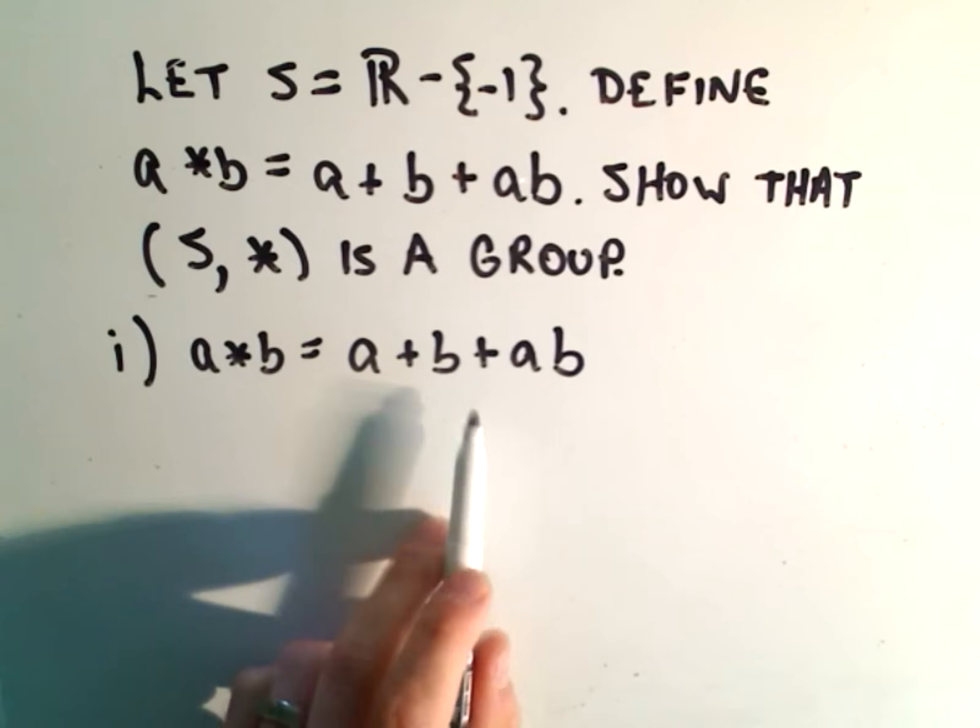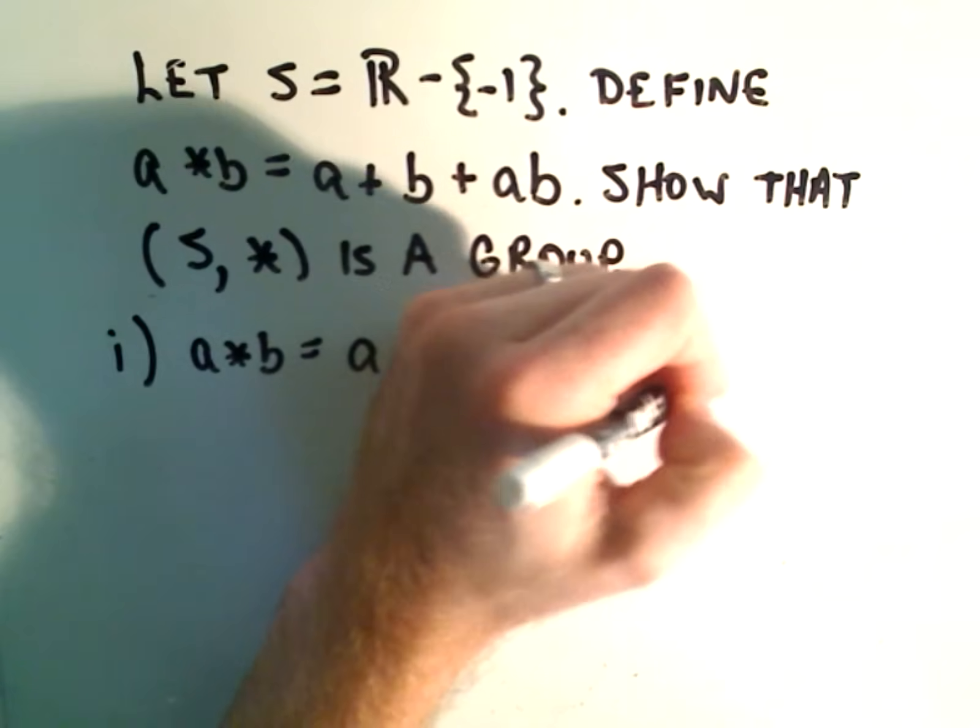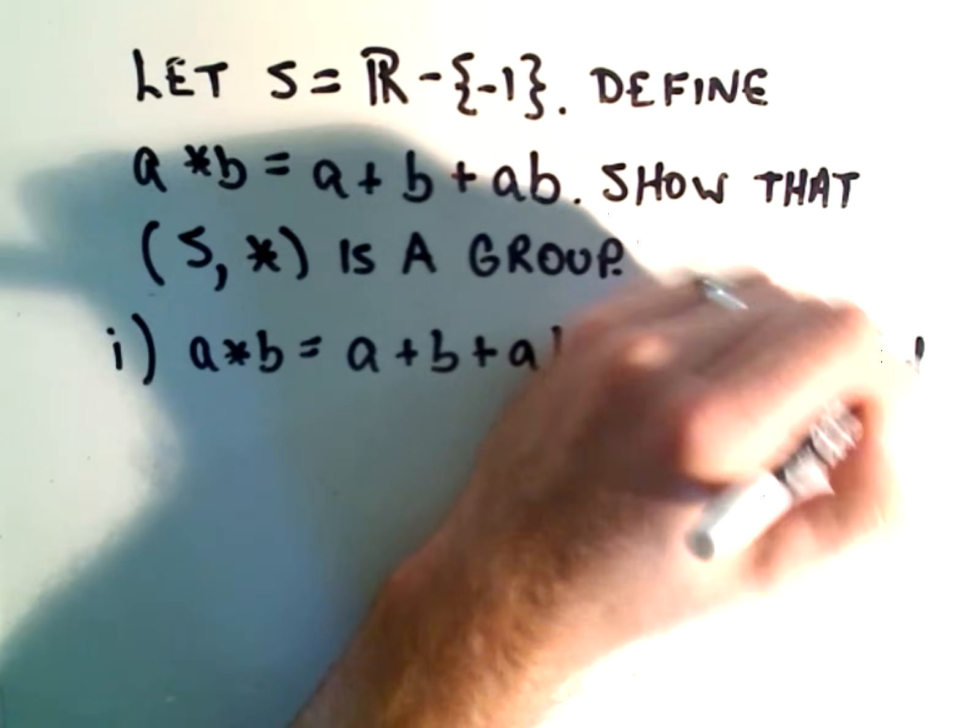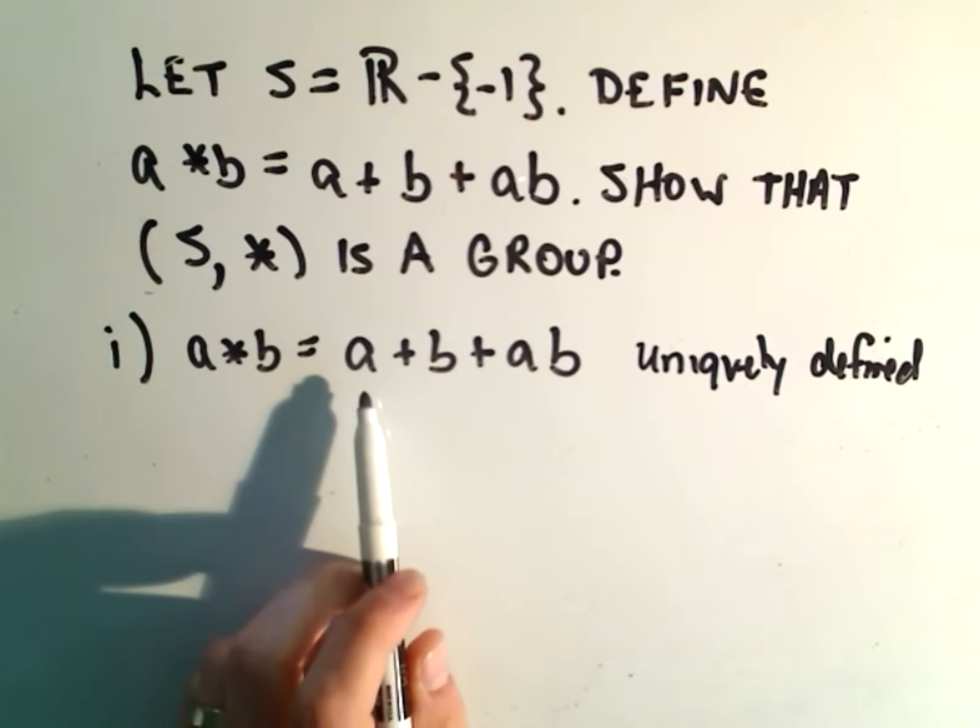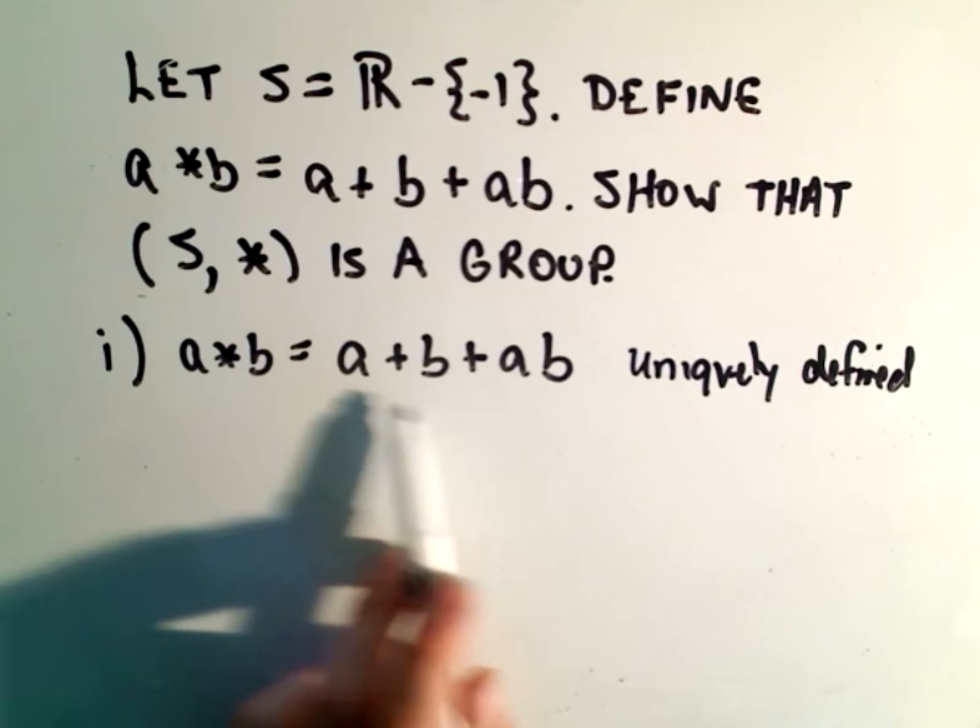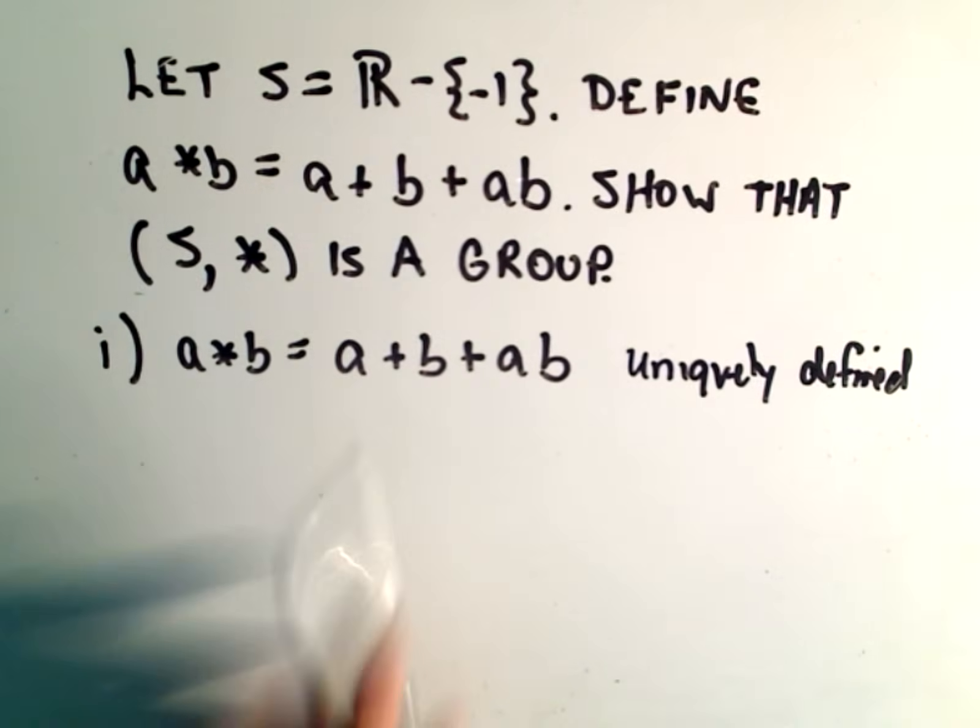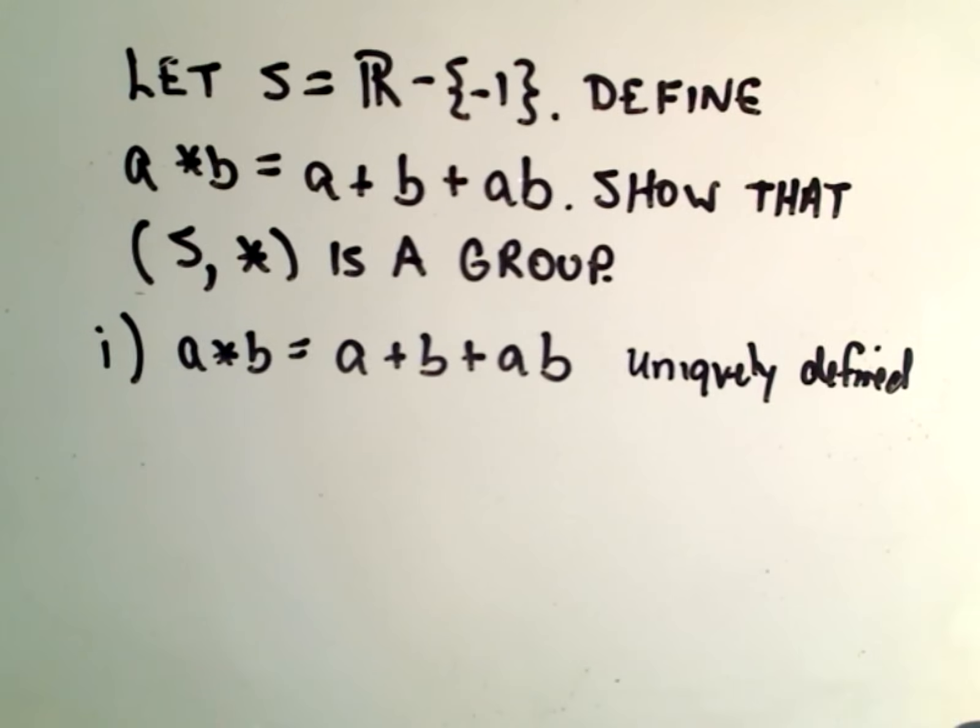I think it's pretty clear to see that this would be uniquely defined. We're dealing with real numbers in addition and multiplication. If you add a number plus a number and their product, you're going to get a unique number.